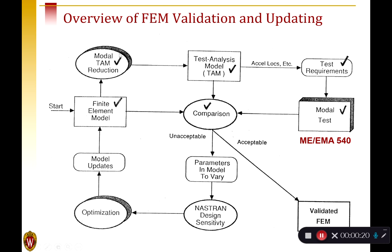Here's an overview of the whole process and the things with check marks are things we've already talked about. We start with some finite element model, we've learned how to create simple models in Nastran, we learned how to reduce those to test analysis models and pick accelerometer locations and prepare for a test. We've talked a lot about the comparison, how we will compare the finite element model to the modal test. The next steps are to understand how we actually update the model and come up with an improved finite element model.